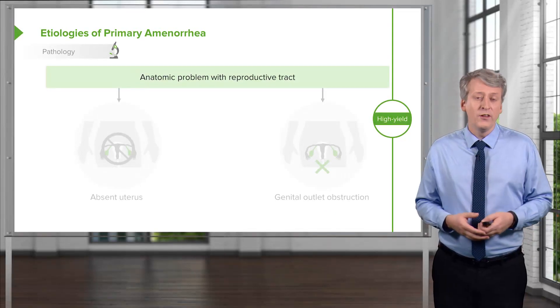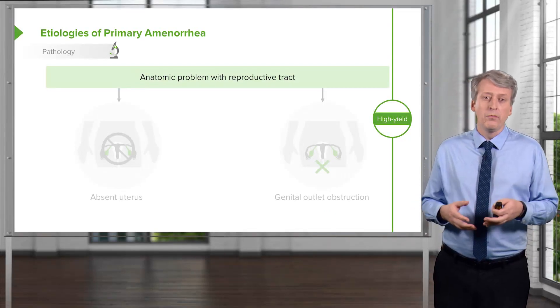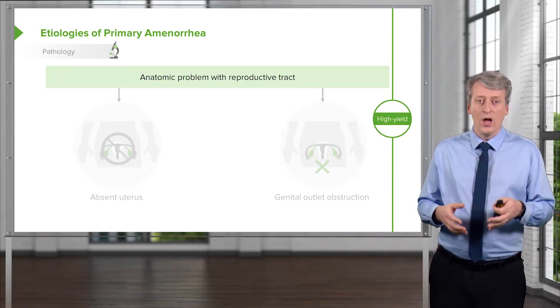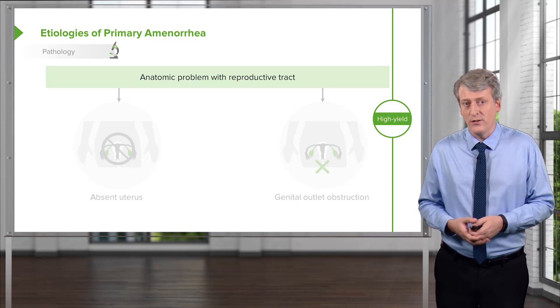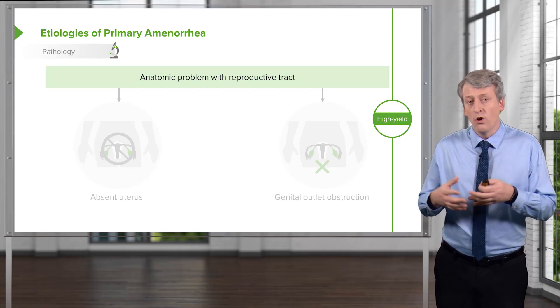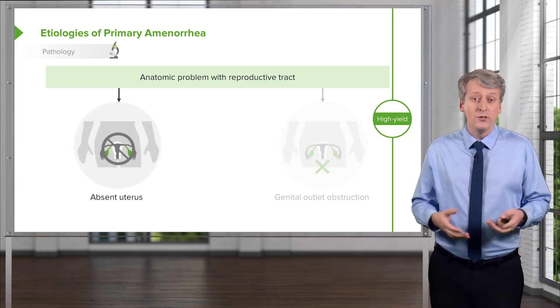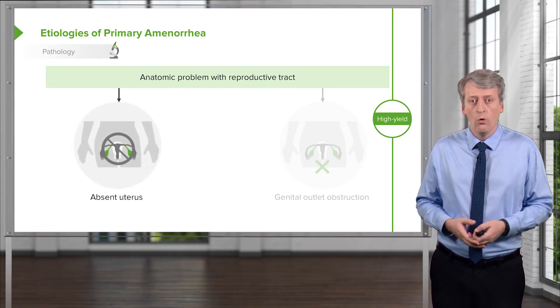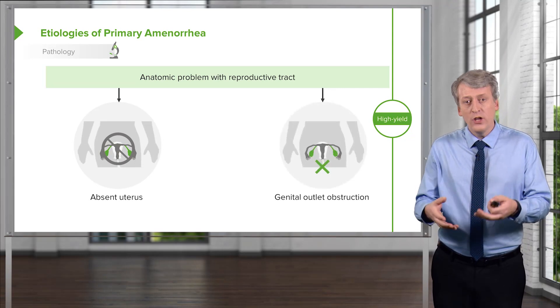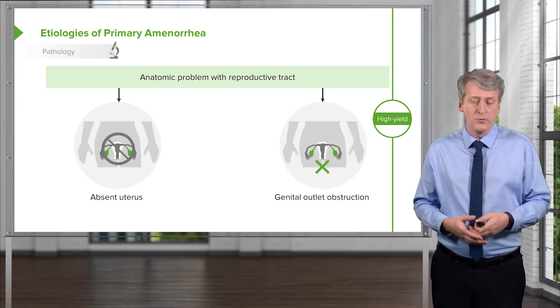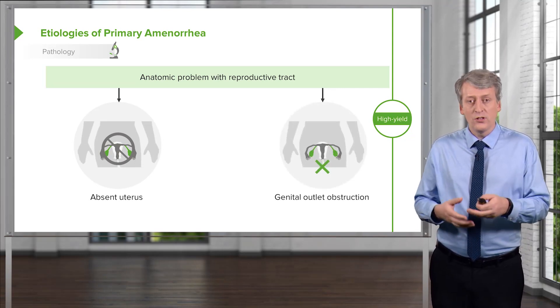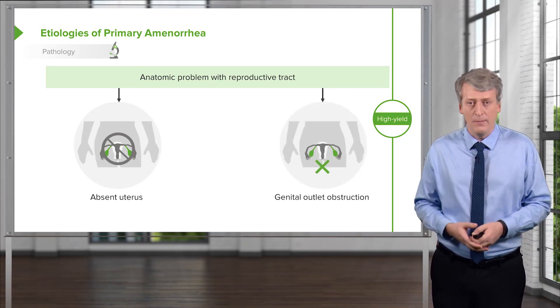Alternatively, there can be a problem with the anatomic aspects. For example, the patient may have an absent uterus or a genital outlet obstruction, such as an imperforate hymen.